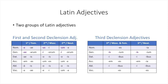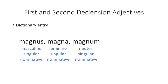The first and second declension adjectives have an A, U-S, and U-M ending in our dictionary entry. Dictionary entries for adjectives go in the pattern of masculine singular, feminine singular, and then neuter singular nominative. So you'd see it as magnus, magna, magnum. That magnum form would be what we'd use to describe a neuter singular nominative noun.